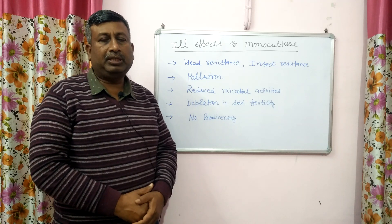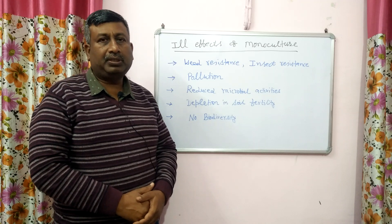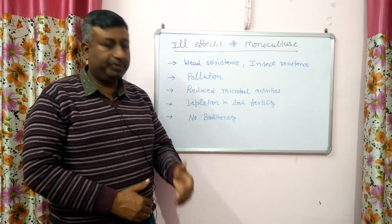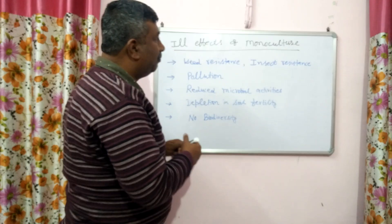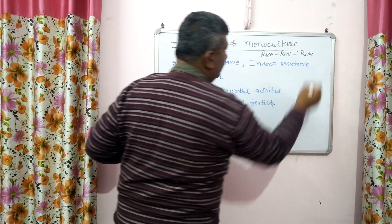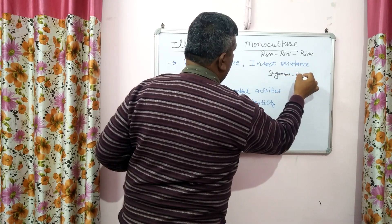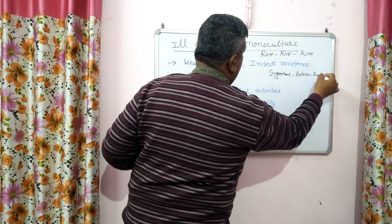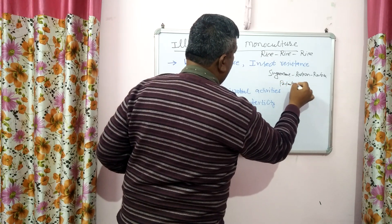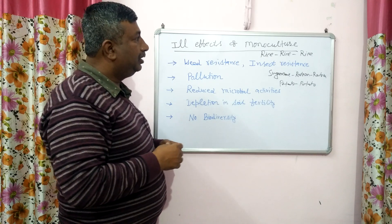Suppose we grow rice in Kharif season and chickpea in Rabi season, then there are two crops. But if we are growing rice in Kharif season, Rabi season, and summer season — rice, rice, rice — then it is monoculture. Continuous growing of the same crop is monoculture. Similarly, sugarcane grown continuously, then ratoon, then ratoon, then plant crop — that is monoculture. Similarly, potato grown continuously in each season.